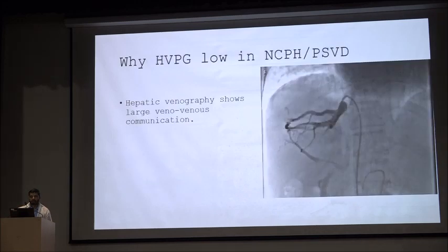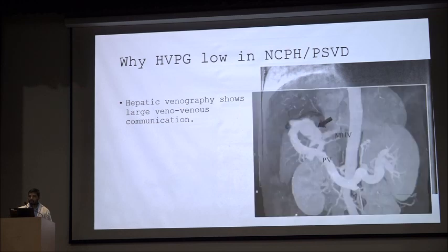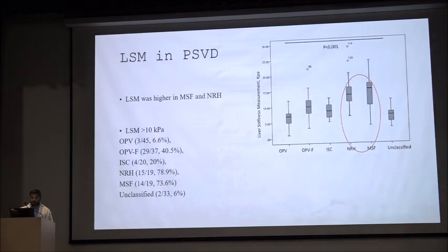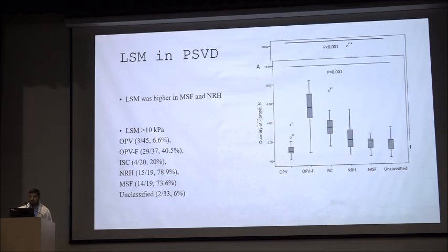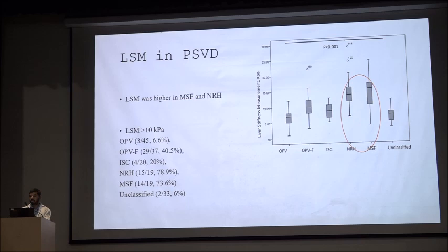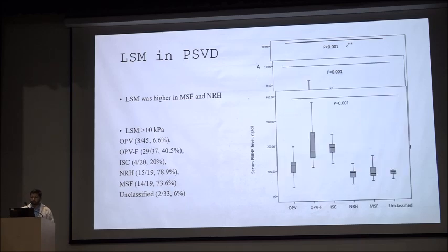HVPG is lower in PSVD because of large veno-venous communications, which can range from small to large shunts. Regarding LSM in PSVD, the same study showed NRH and mega-sinusoid with fibrosis had slightly higher LSM above 10, but this was spurious — confirmed by quantification of fibrosis, which showed only OPV and ISC had higher fibrosis, while NRH and MSF did not. Pro-collagen test was also higher in OPV and ISC but normal in NRH and MSF.